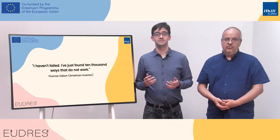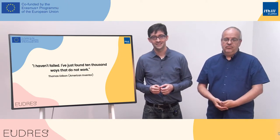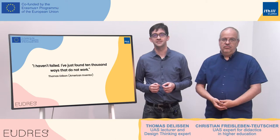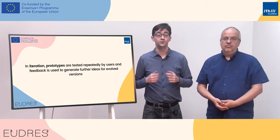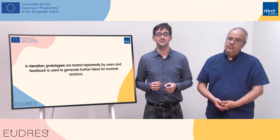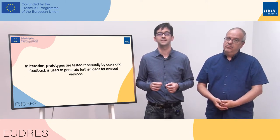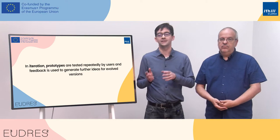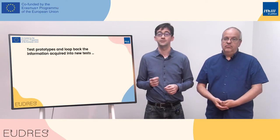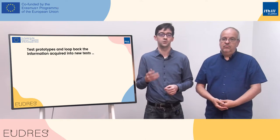"I haven't failed. I just found 10,000 ways that don't work." These are true words spoken by the famous inventor Thomas Edison. During the phase of iteration, prototypes are tested by users whose feedback is used to generate further ideas that end in a new or at least evolved version of the prototype, which will be tested again and again until it works.